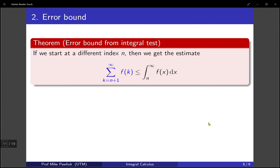So if you were to start at a different index n, then you would get this estimate. So the sum, starting from k equals n plus 1 all the way to infinity, would be less than the integral from n to infinity of f of x. Now of course there's an upper estimate as well, but we're not going to use that one in this video, so I'm just going to focus on the underestimate.